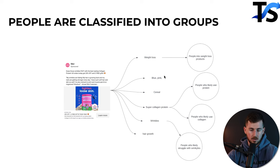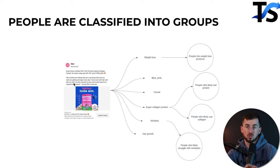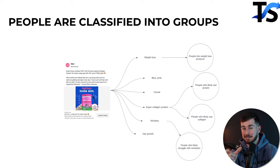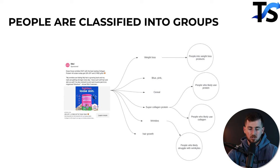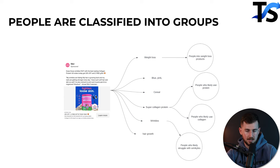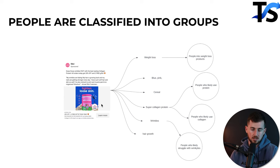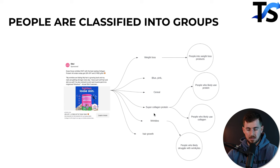Facebook pulls thousands of data points from each ad. For example, an ad showing weight loss, blue and pink colors, cereal, and super collagen protein — Facebook reads the creative itself, body copy, and headline. About 80% lies in the creative itself. So if you want to improve your targeting, improve your creatives. In this example the ad targets people wanting to tighten loose skin — Facebook places it in weight loss, beauty, and health categories based on those visual signals.